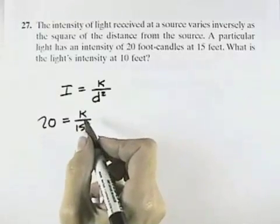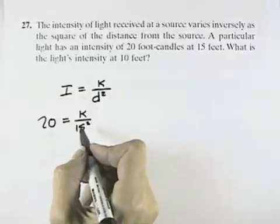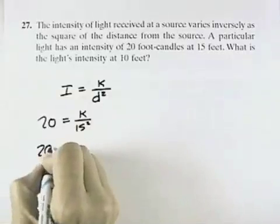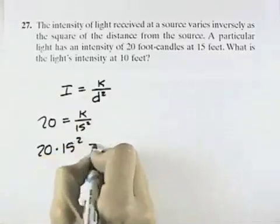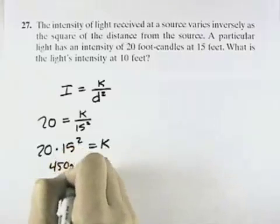So if we square 15, we'll multiply both sides. 20 times 15 squared. So multiply both sides by 15 squared to have 20 times 15 squared equals K, and that gives us a K value of 4,500.